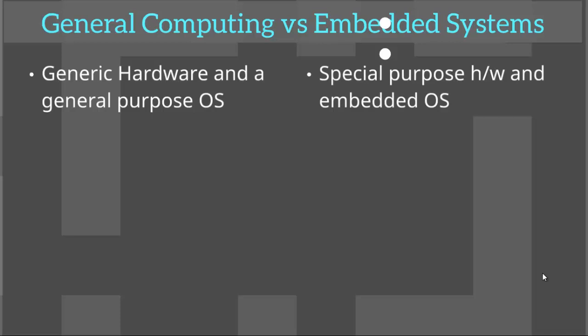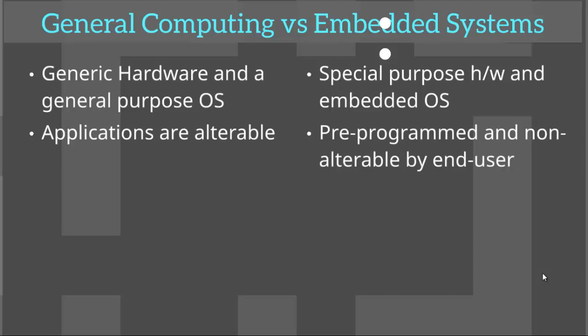In contrast, embedded systems have special purpose hardware and embedded software. Consider a DVD player as an example — it has a few buttons to interact, a few types of supported output formats, and the software is also specific. The applications in a general computing system are alterable; you can run videos, play games, listen to music, use the PC for engineering calculations, etc. An embedded system comes with pre-programmed and non-alterable software. In a DVD player, the software can't be used for engineering calculations. Recently, some embedded systems running on an OS have provided ways to update to a newer version, but this too is very limited, and with fixed hardware there aren't many changes the software can alter.